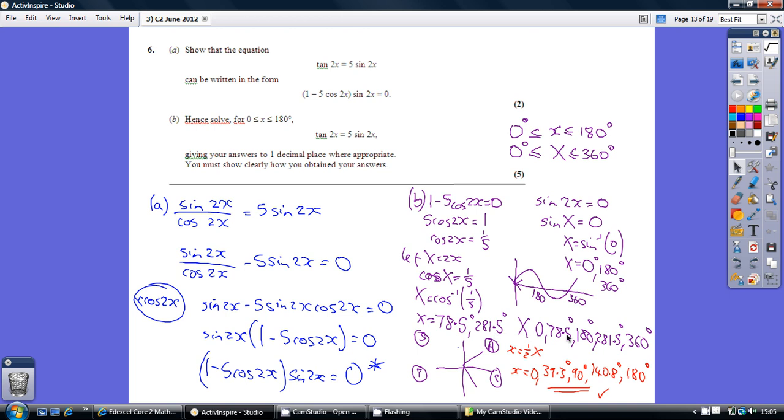So bringing all of these together, these are all our solutions for capital X. We want our solutions for little x, little x being half of capital X, so we have all these solutions to get our set of solutions which are these in red.